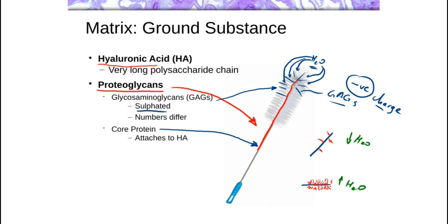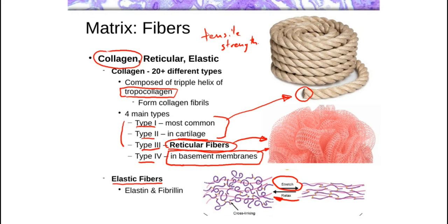Over the next couple of slides, I'll show you examples of what these things look like under the microscope. In terms of staining, ground substance — because it is so negatively charged — is going to be very basophilic, so it stains with hematoxylin. Most collagens will stain with eosin. Type 3 collagen is frequently stained with silver and is described as being argyrophilic — silver-loving. Type 1 collagen, for example, would be eosinophilic.